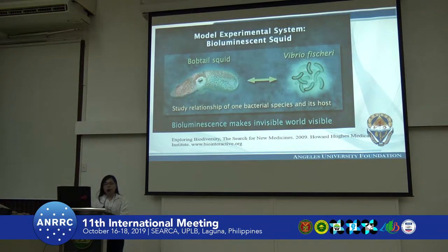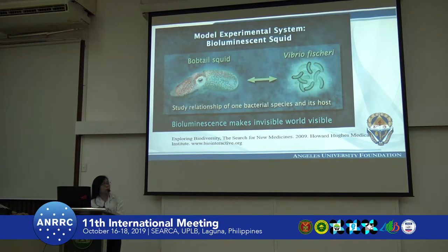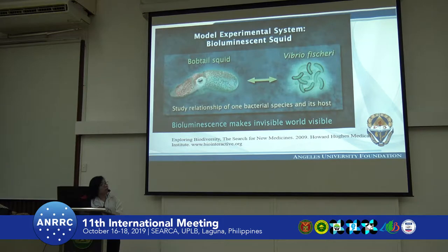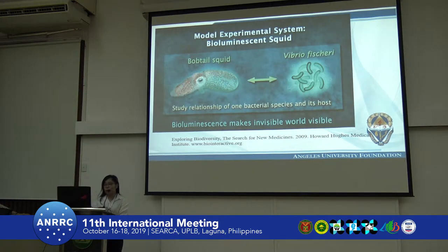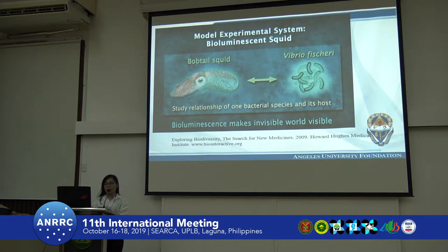I have here a model of the experimental system. The first model used for the isolation of the Vibrio species or bioluminescent bacteria is the bobtail squid. What happens here is that Vibrio fischeri or the Vibrio species is being eaten by the bobtail squid as a source of food. Meanwhile, the Vibrio species is producing luminescence in order for it to be eaten by the predator, which is the bobtail squid, because it needs nutrients coming from their gut.